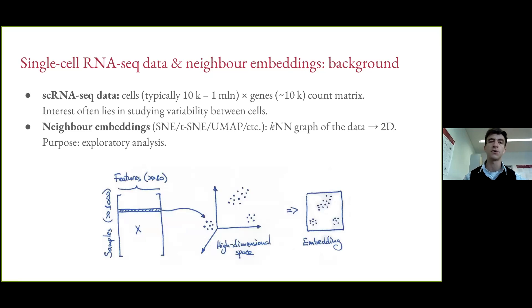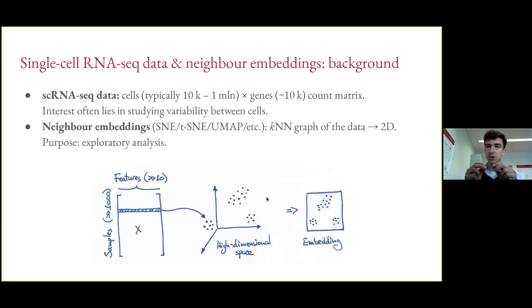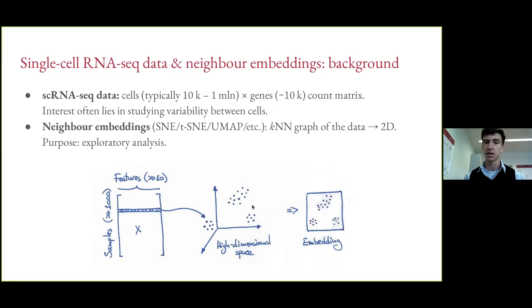Neighbor embeddings — algorithms like UMAP, t-SNE, and so on — are methods to map high-dimensional data to low dimensions, usually two dimensions, for the purpose of visualization. Importantly, they all work by constructing a k-nearest neighbor graph of the high-dimensional data and then arranging the points in 2D so that neighbors remain neighbors. The purpose is exploratory analysis — to get some insight into the structure of high-dimensional data that is otherwise difficult to perceive directly.